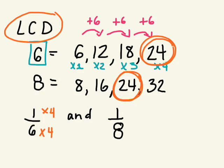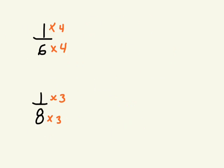And what do we multiply 8 by to get 24? Yes? Good, 3. Okay, so we're going to rewrite both of these with their equivalent fraction. Okay, so now we are going to write an equivalent fraction. 1/6 is equal to 4/24, and 1/8 is equal to 3/24.